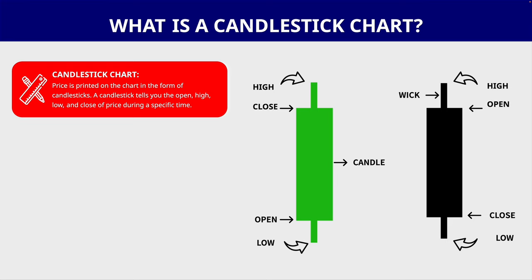Vice versa, if we look at the black candle on the right, it's an example of a bearish candle. The high and low are still the same — the high of the wick is still the high, the low of the wick is still the low. But for the body, the open and close are switched because it's a bearish candle, meaning it closed lower than when it opened. So the top of the body is the open and the bottom is the close.